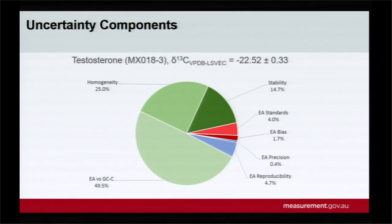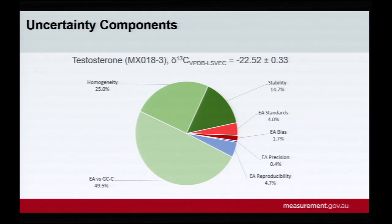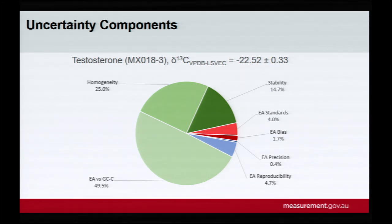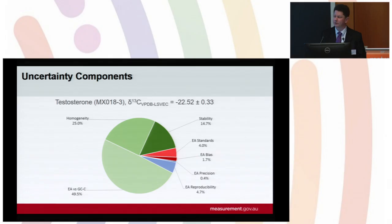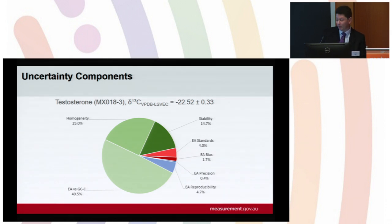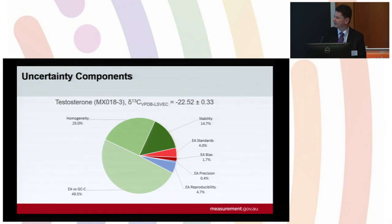In terms of the uncertainty budget, here is a typical uncertainty for testosterone in the third ampule. It is dominated by the difference between the elemental analysis and the GCC combustion. The homogeneity and stability components are also quite large — all three are related to the lower precision of GCC combustion IRMS compared to elemental analysis. The bias component from calibration of the elemental analysis combined with oxygen-17 contributions accounts for only around 1.5–1.7%, well under 2% in most cases.